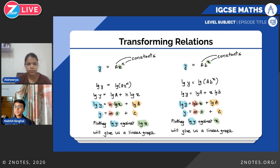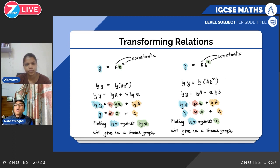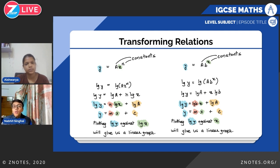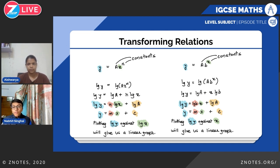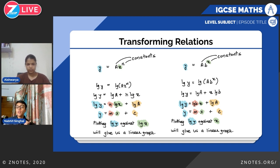Similarly, for y equals a·b to the power x, where a and b are constants, you take log and simplify to get log y equals log b times x plus log a. Here log y compares to y and x compares to x. When you plot log y against x, you get a linear graph with gradient log b and y-intercept log a. That's it for transforming relationships.